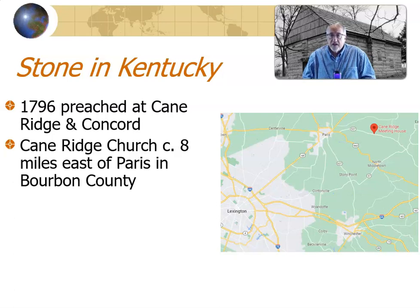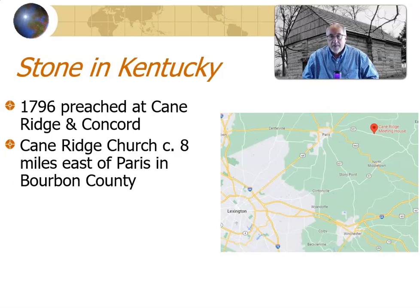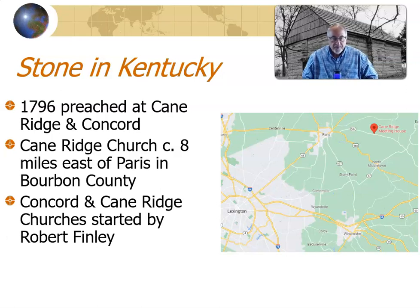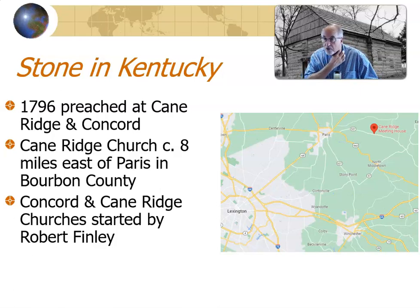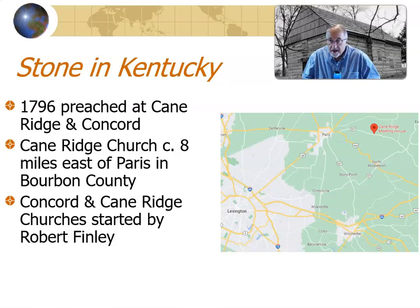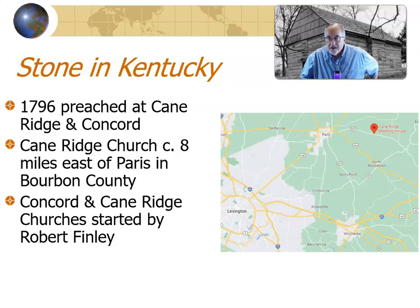The Cane Ridge Meeting House was a tremendous meeting house for its time — it can hold 300 people, maybe more. It's two stories with a balcony, and Barton will preach here for several years. Concord and Cane Ridge were started by a Presbyterian minister named Robert Finley, who will eventually end up in Ohio as a Methodist, switching from Presbyterian.